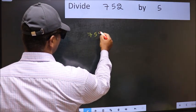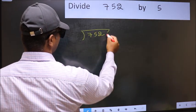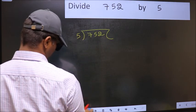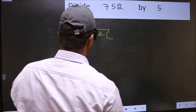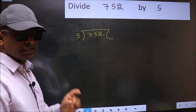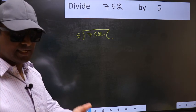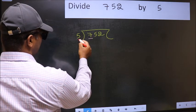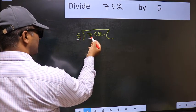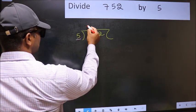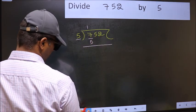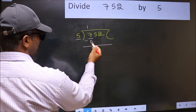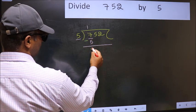752 and 5 here. This is your step 1. Next, here we have 7 and here 5. A number close to 7 in 5 table is 5 once 5. Now you should subtract. 7 minus 5, 2.